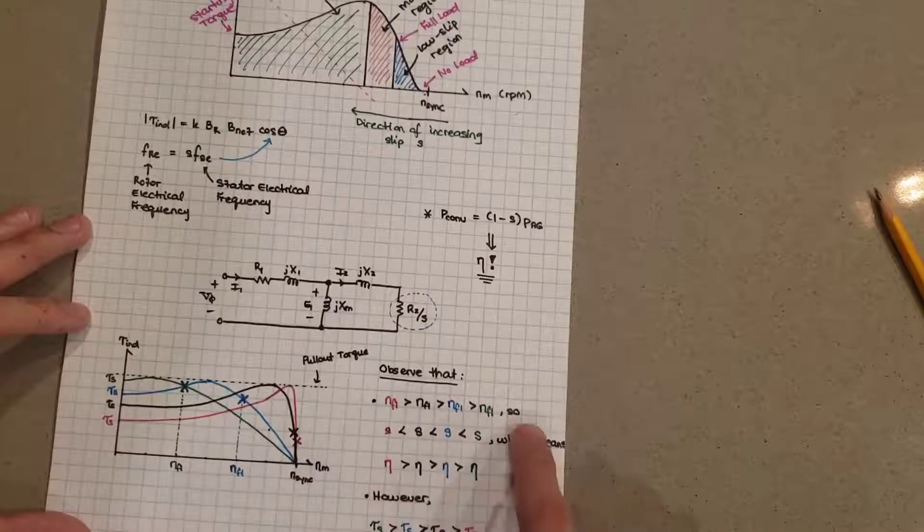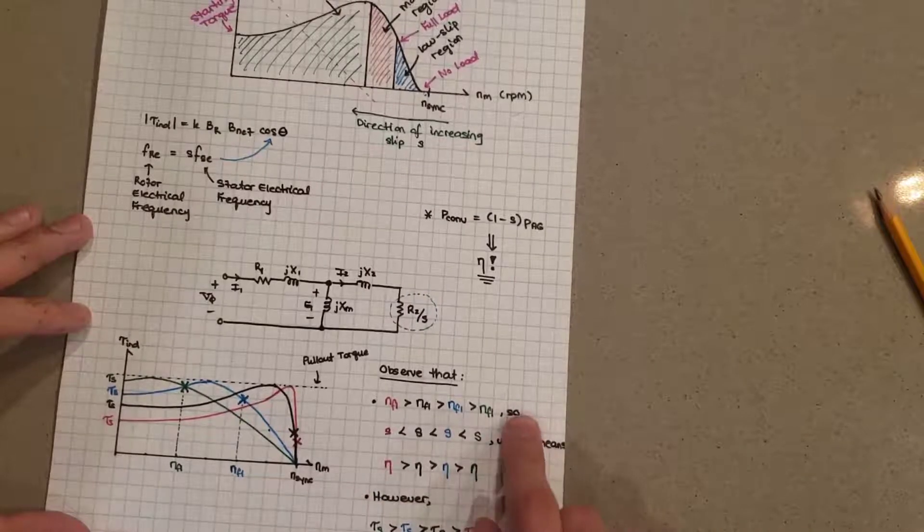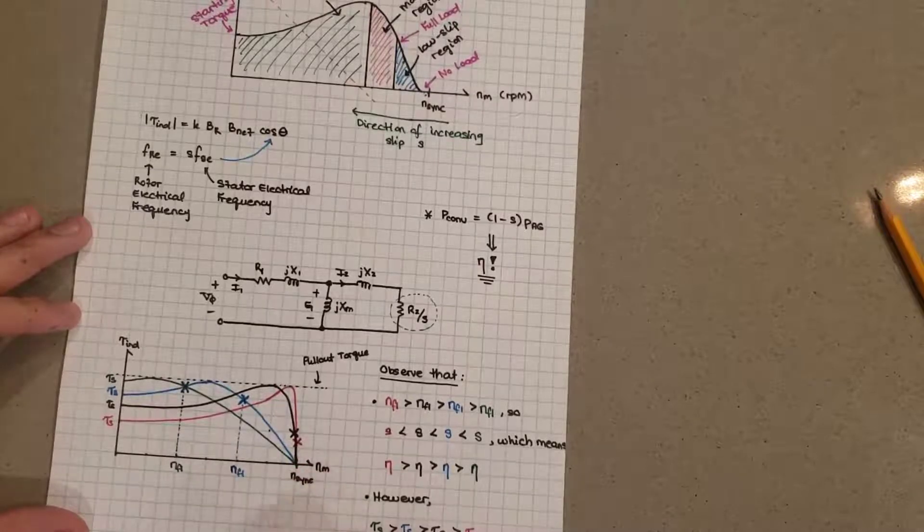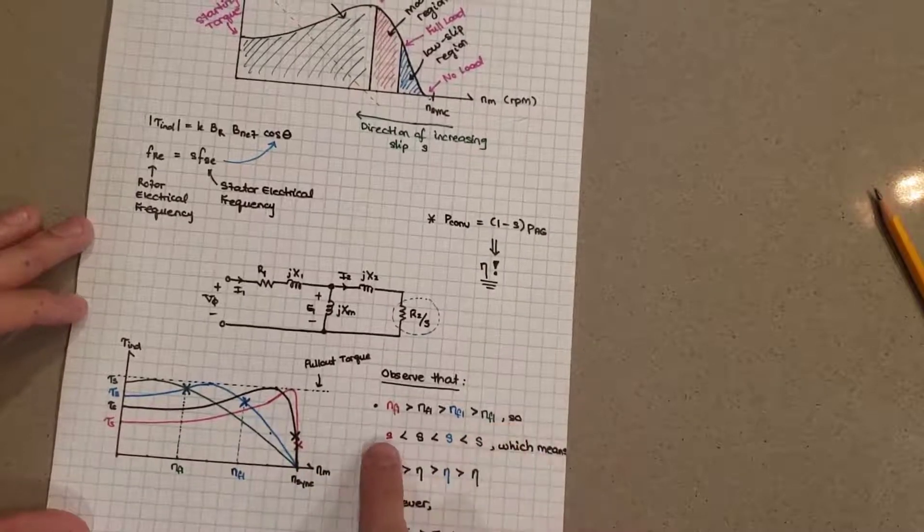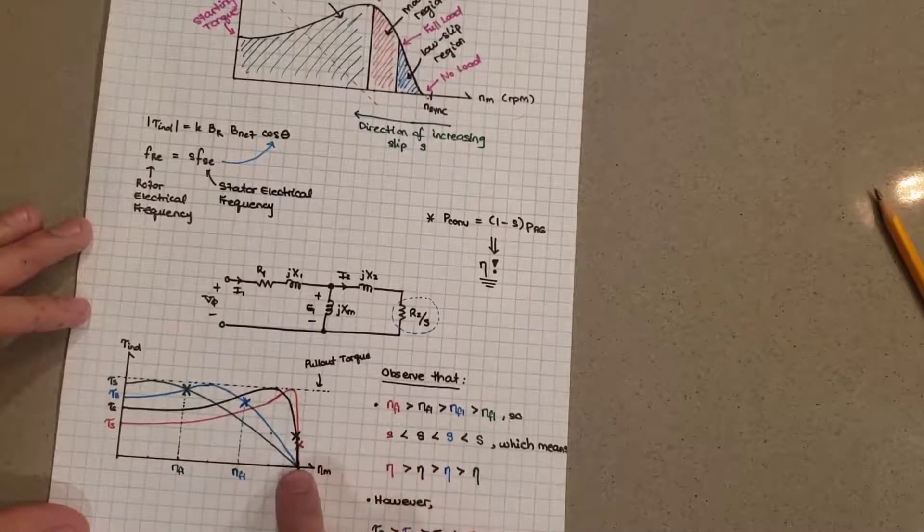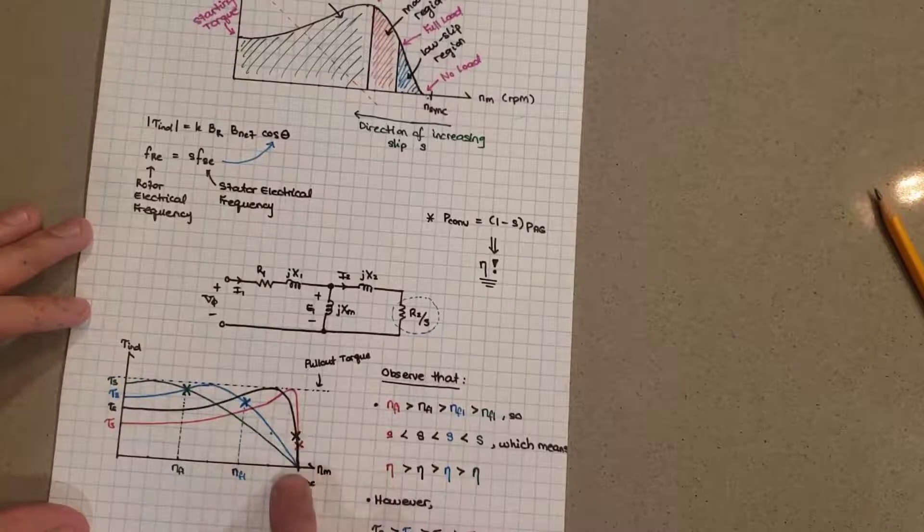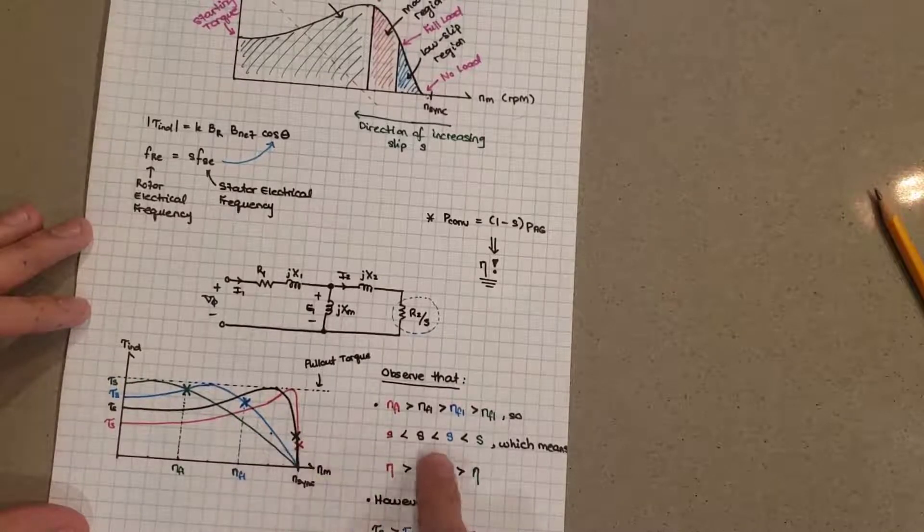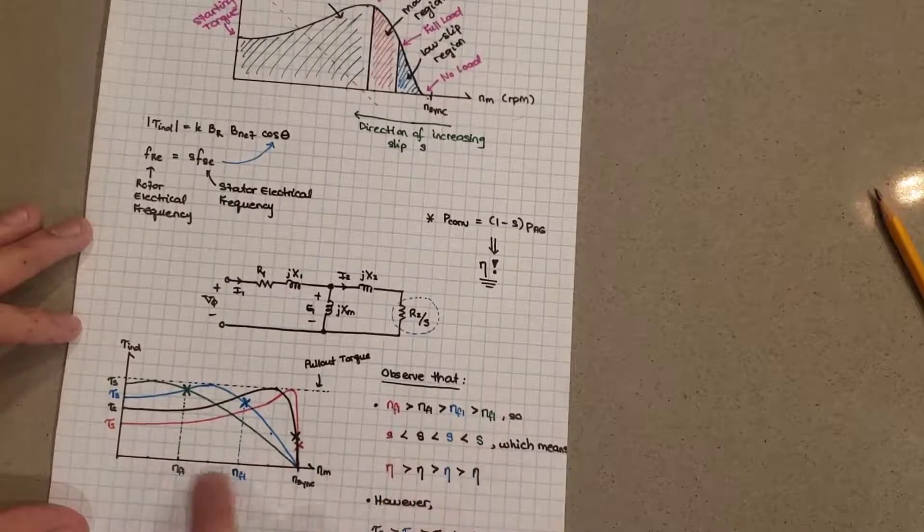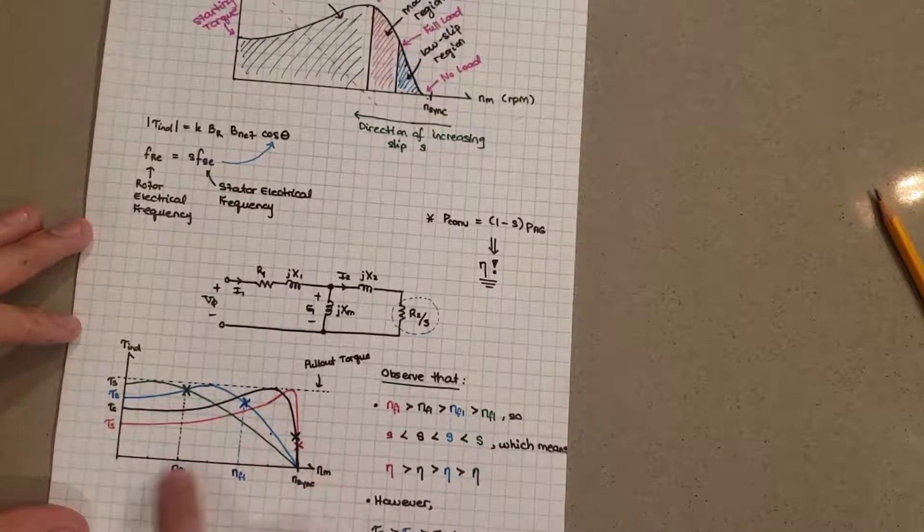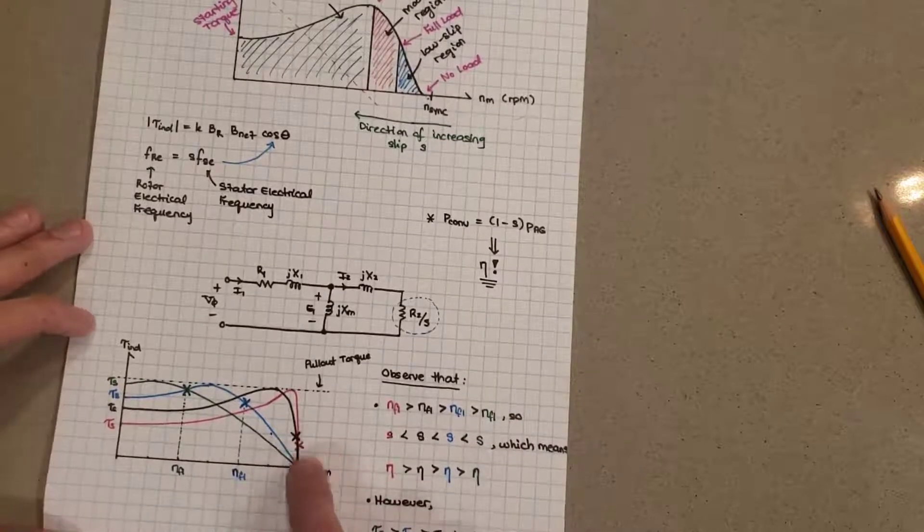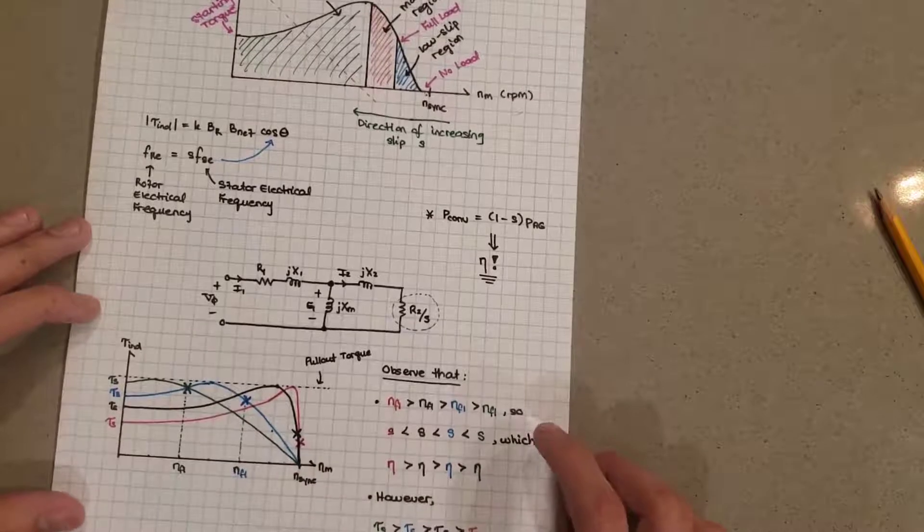So what does that mean? Now that means that because these are kind of distances from the synchronous speed, we can also say that the slip ratio of the red guy is less than the slip ratio of the black guy and less than the slip ratio of the blue guy and so on. So the green has the largest slip ratio of all of them, lowest speed, and the green has the largest slip ratio. The red has the largest speed and the smallest slip ratio.